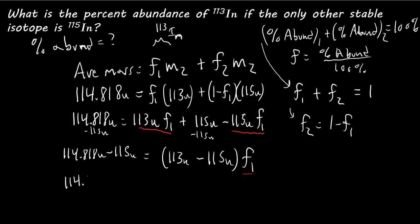So, we got 114.818 u minus 115 u, all divided by 113 u minus 115 u. So, that equals the fractional abundance of indium 113.